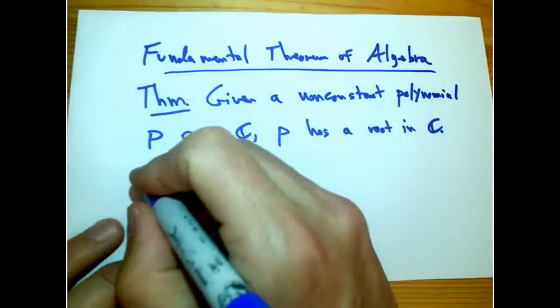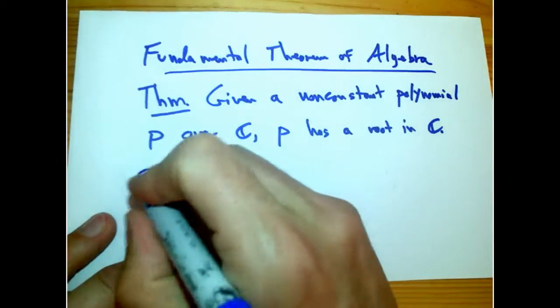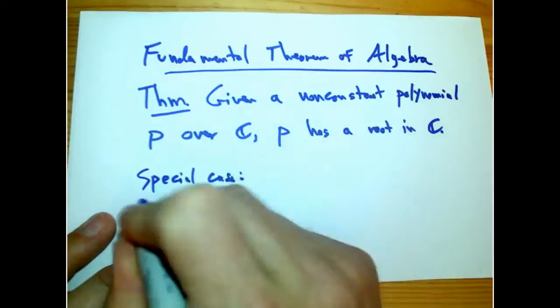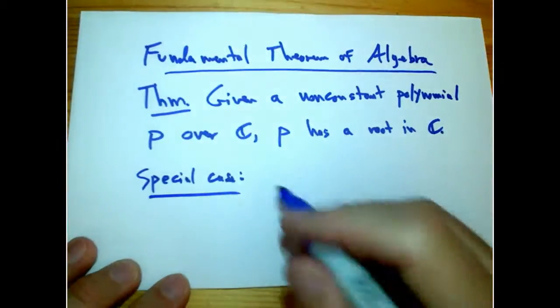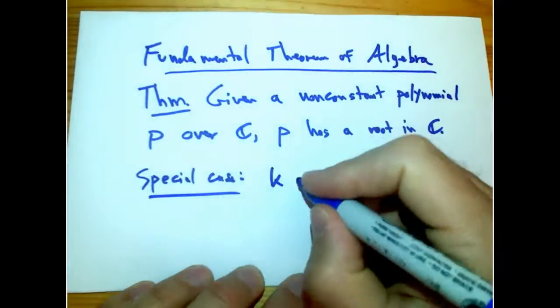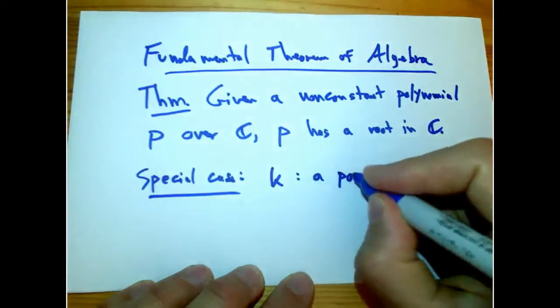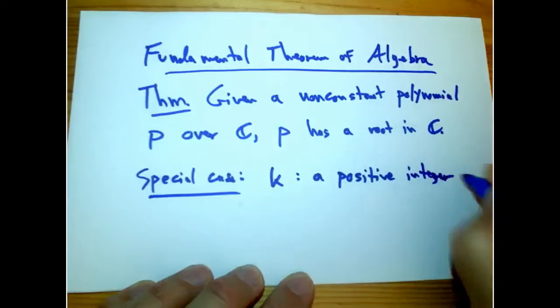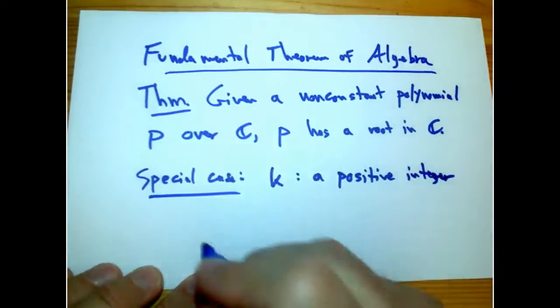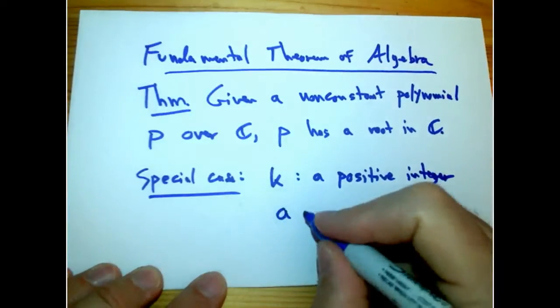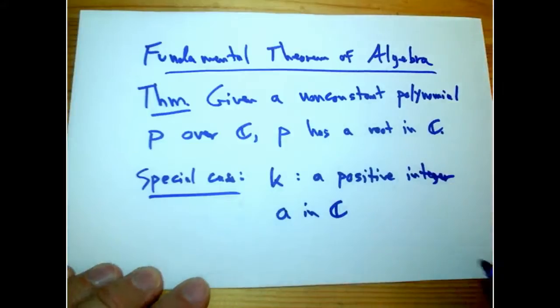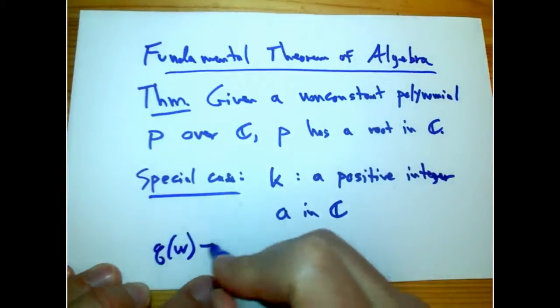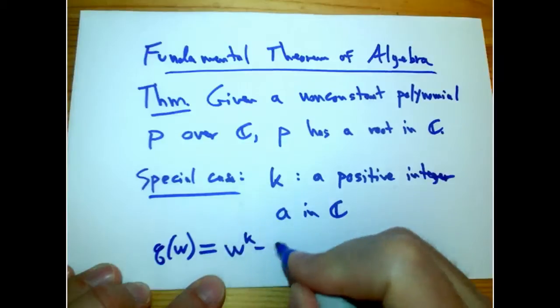What I want to do first is look at a special case. Let k be a positive integer, and let a be in the complex numbers. And let's say q is the polynomial q(w) = w^k - a.